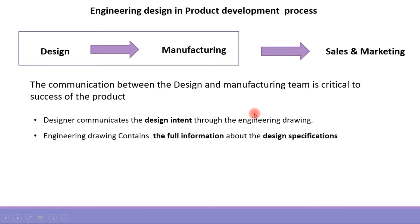The engineering drawing contains the full information of the design specifications. It is also the official document for the design, acting as a record. Whenever there are changes in the design, the record gets revised, which helps in change management. So the engineering drawing is used primarily for communication and documentation in product development, and it is a very critical document for design and manufacturing.